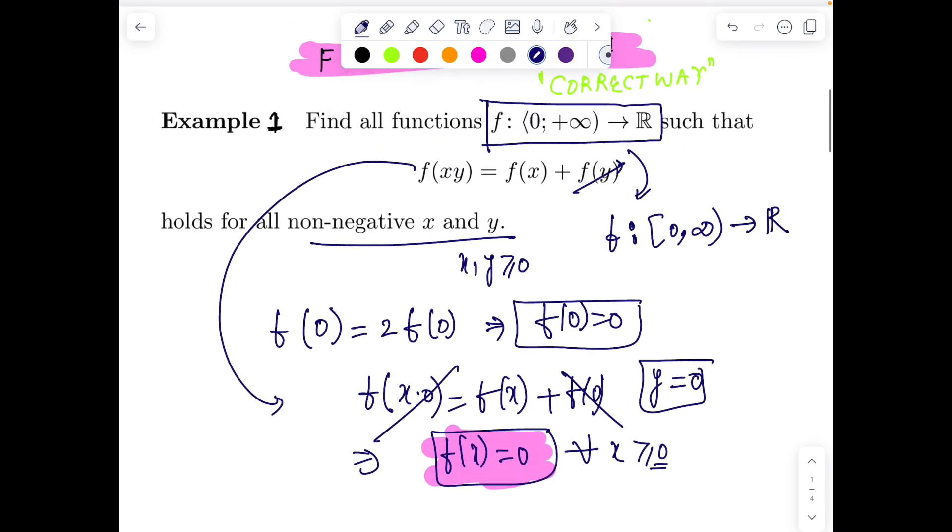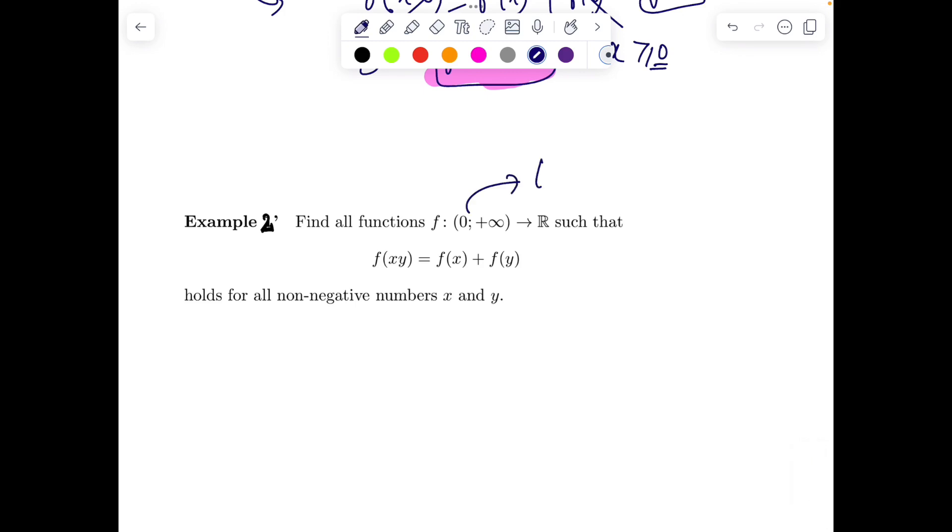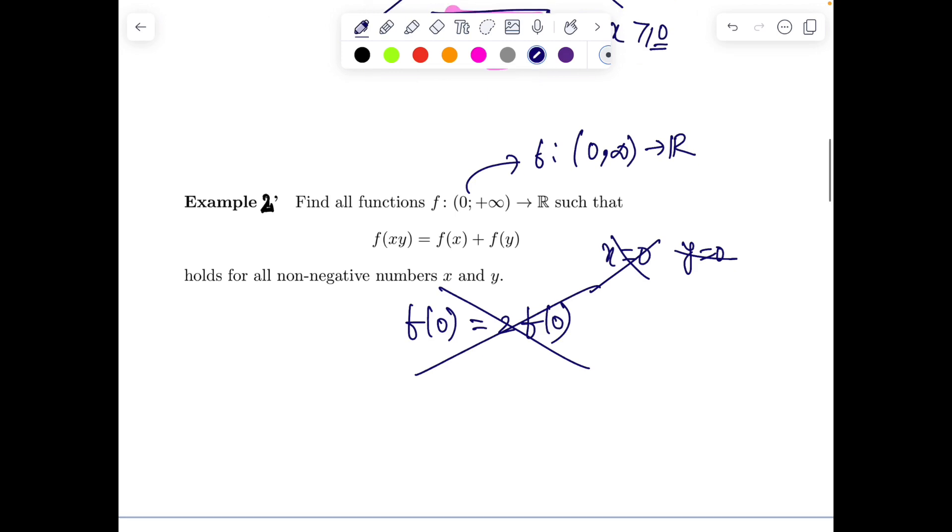Now this question looks exactly similar to the first one. What's the difference? Here the domain is (0,∞) to ℝ, with 0 excluded. So clearly I can't put x = 0 or y = 0. The reasoning f(0) = 2f(0) is definitely wrong.